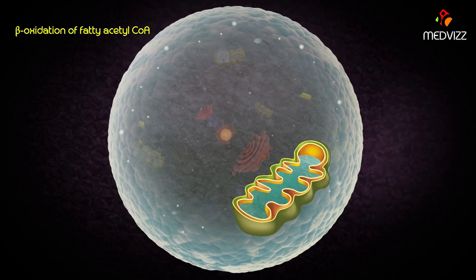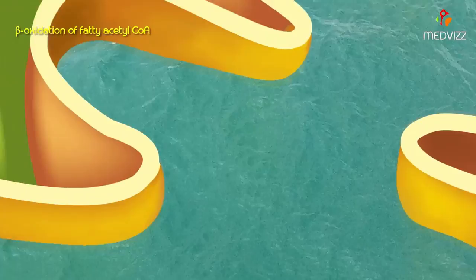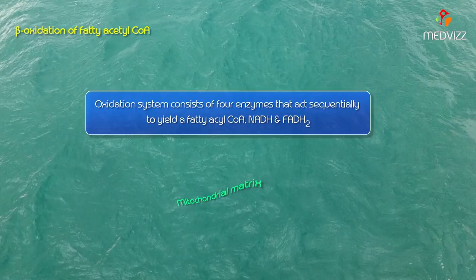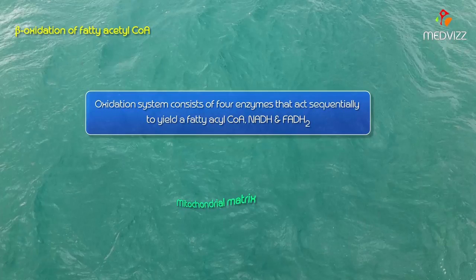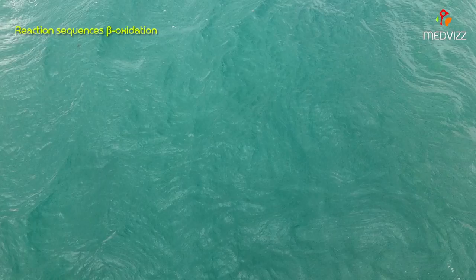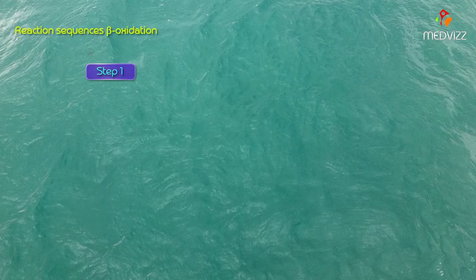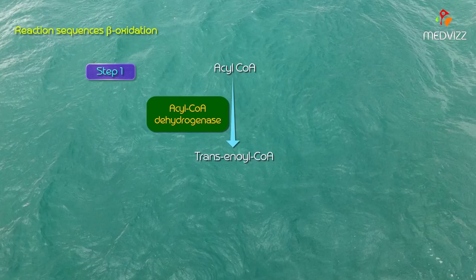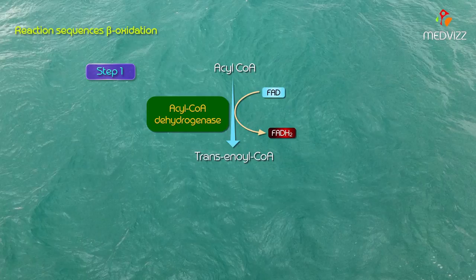Beta oxidation proper occurs in the mitochondrial matrix. The oxidation system consists of four enzymes that act sequentially to yield a two-carbon acetyl CoA while producing NADH and FADH2. In the first step, acyl CoA is dehydrogenated by acyl CoA dehydrogenase to produce trans-enoyl CoA, where one molecule of FAD is reduced to FADH2.